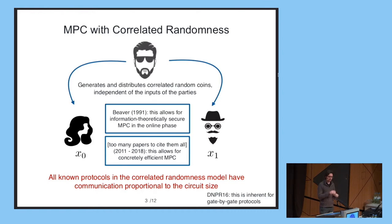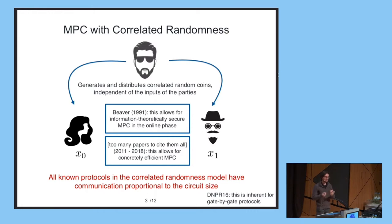In this work, I'm going to revisit this question and show that we can somehow get the best of both worlds: simultaneously the sublinear communication guarantees that we could only achieve as of today in the case of computationally secure computation, but at the same time having information-theoretic security and good concrete efficiency with no cryptographic operations in the online phase.